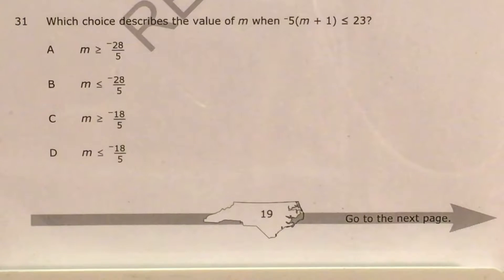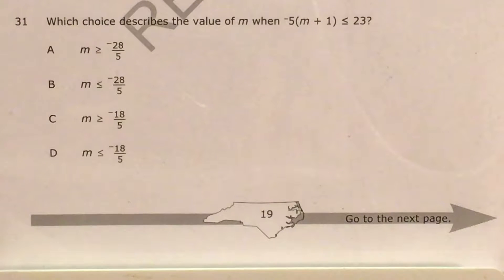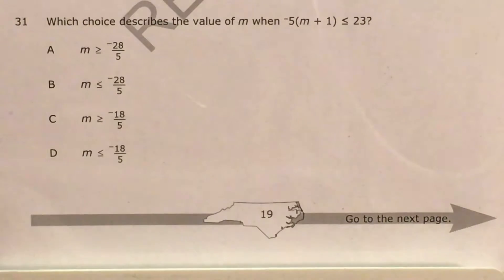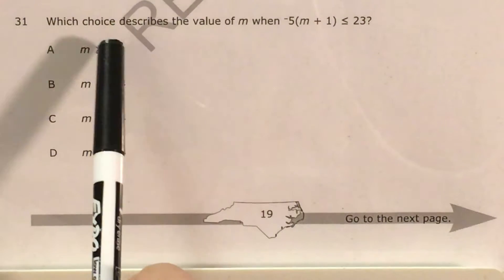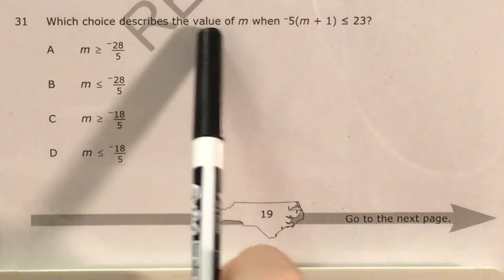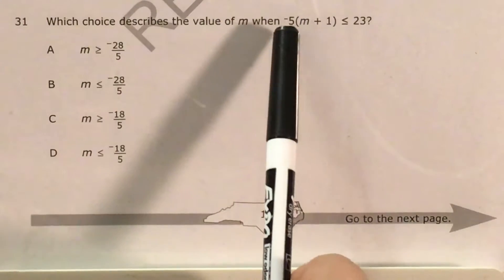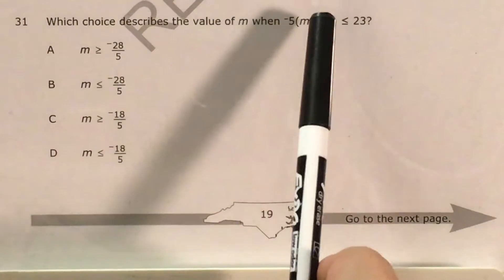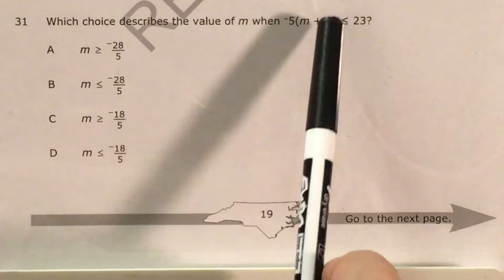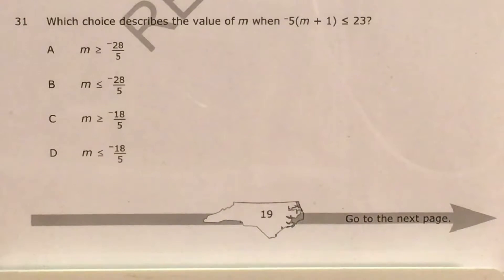What's up math scholars and math haters? This is Mr. W. Today we're going to tackle question 31 in the 7th grade math questions that North Carolina released this past school year. This question is asking us to describe the value of m if all we know is that negative 5 times m plus 1 is going to be less than or equal to 23.